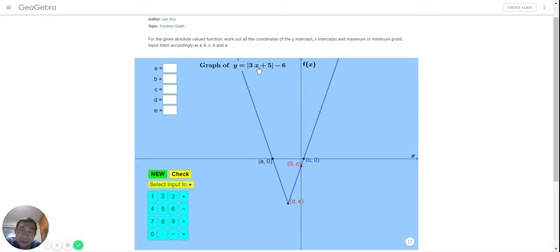So 3x equals negative 11. Therefore, x will equal negative 11 over 3. Let's select the input value to a, negative 11. Now over 3 means divide by 3. There we have it, the first value, which is a.